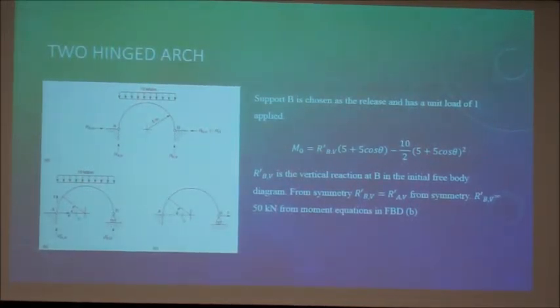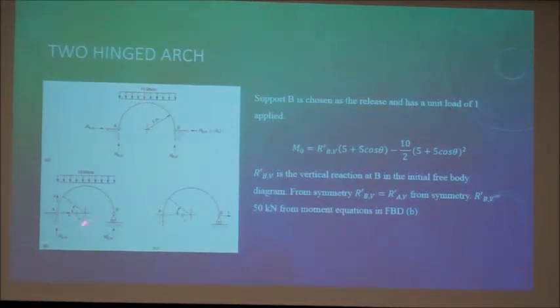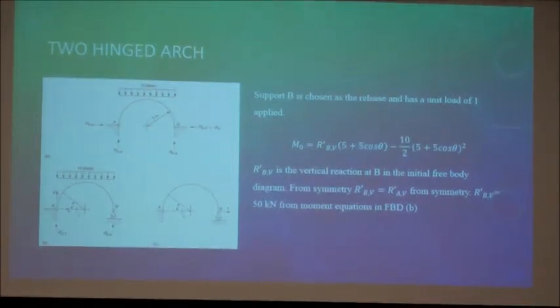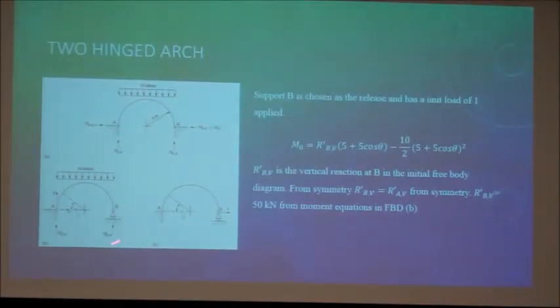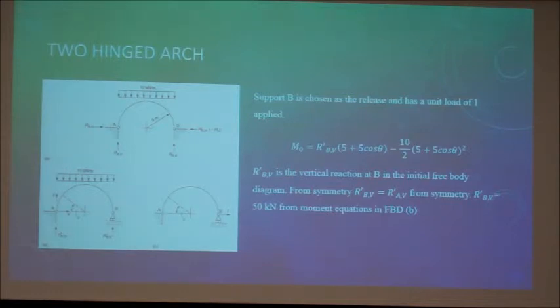If we take a moment, we can find that R'_BV is the vertical reaction at B, and from statics, from this initial free body diagram, R'_AV and R'_BV are equal. We can find R'_BV equals 10 kilonewtons from our moment equations from this diagram, because we do not have the horizontal reaction in that.